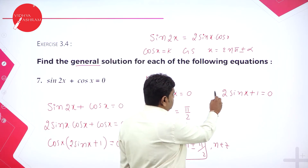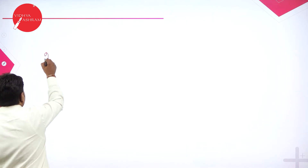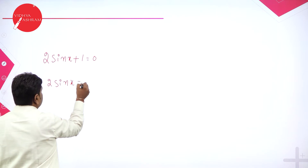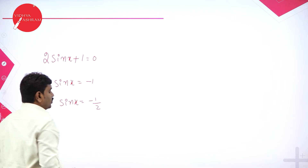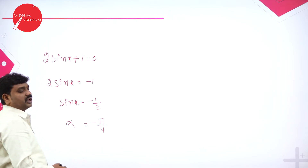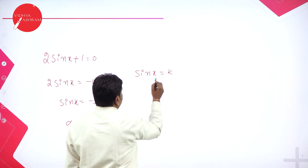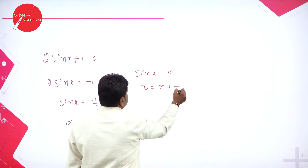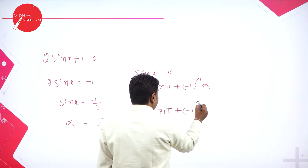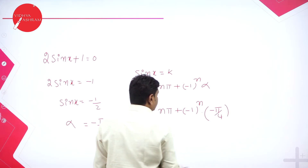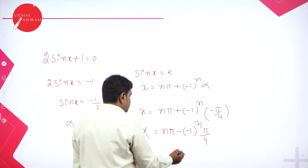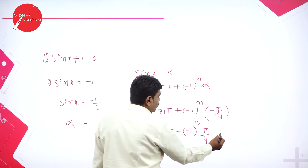The other solution: 2 sin x plus 1 equals 0, so sin x equals minus 1 by 2. In the sin table, sin 30 degrees equals 1 by 2, so alpha is pi by 6, but since it is negative, alpha is minus pi by 4. The general solution for sin x equals k is x equals n pi plus (minus 1)^n alpha. So x equals n pi plus (minus 1)^n times (minus pi by 4), which simplifies to x equals n pi minus (minus 1)^n times pi by 4, where n belongs to integers.